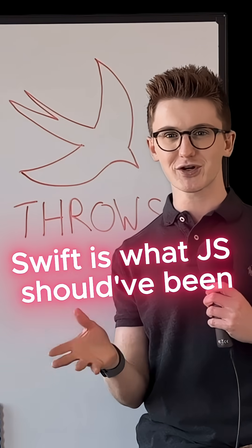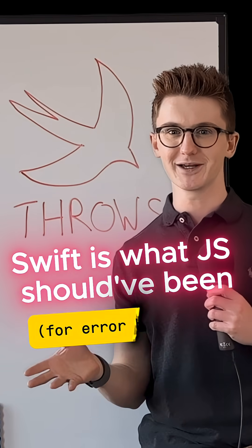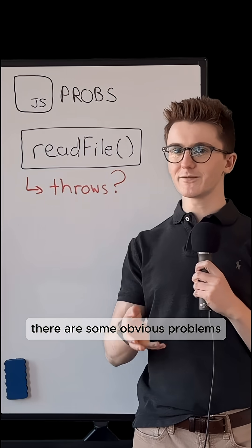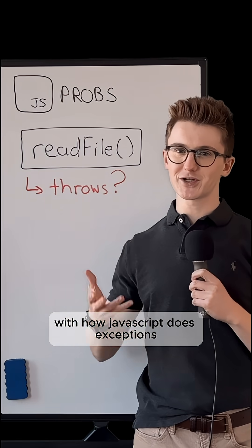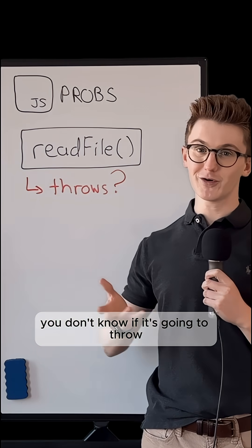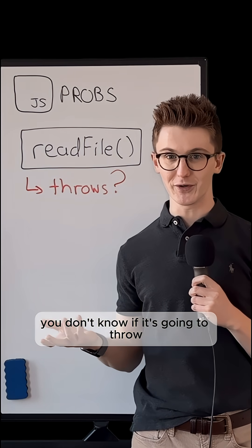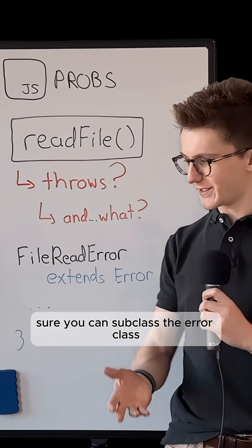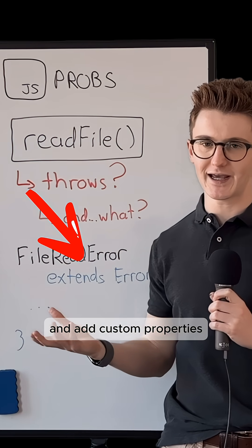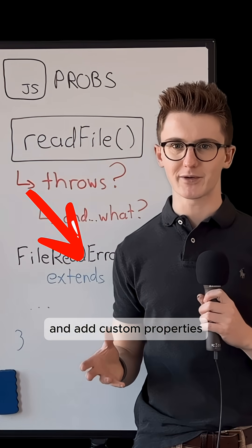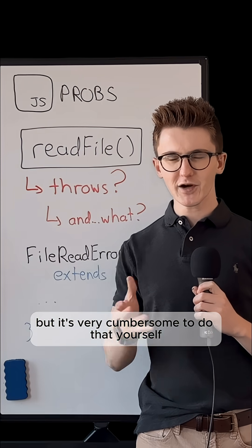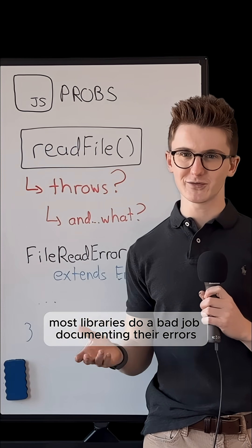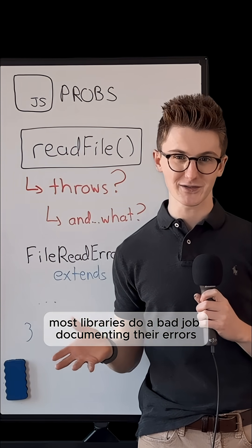Swift is what JavaScript should have been when it comes to throwing and catching exceptions. There are some obvious problems with how JavaScript does exceptions. You don't know if it's going to throw, and you don't know what it's going to throw. Sure, you can subclass the error class and add custom properties, but it's very cumbersome to do that yourself, and most libraries do a bad job documenting their errors.